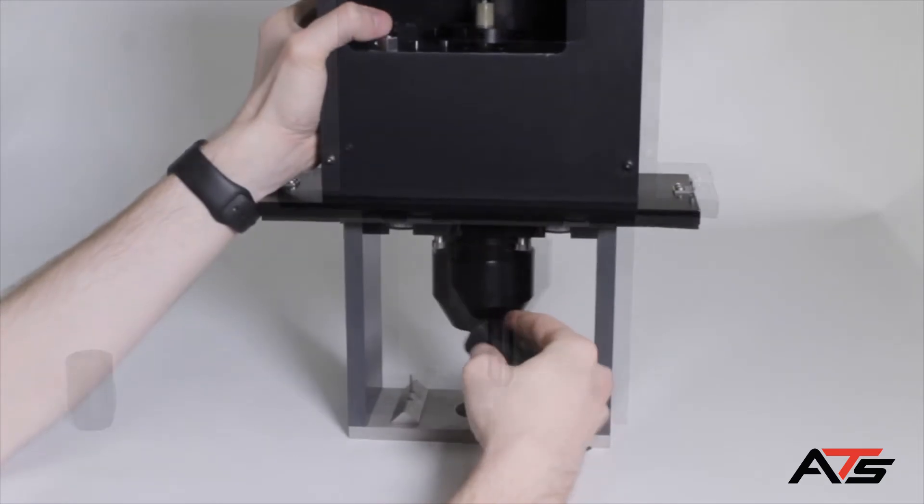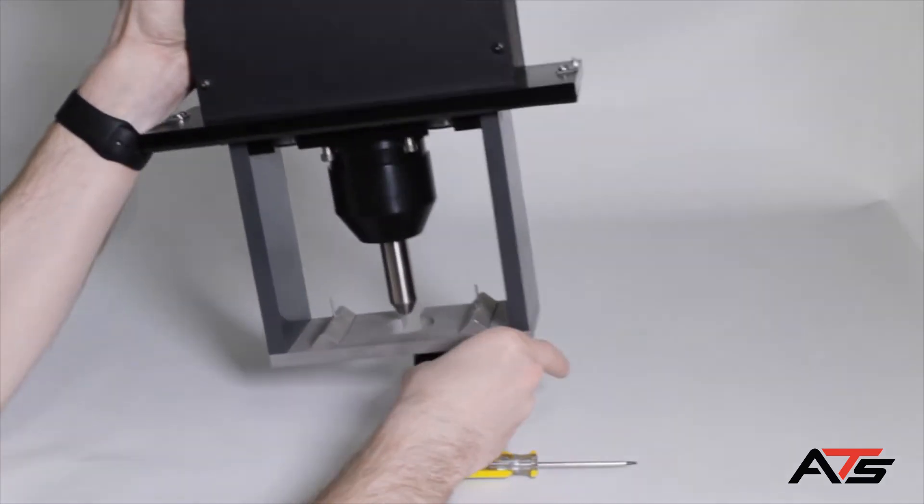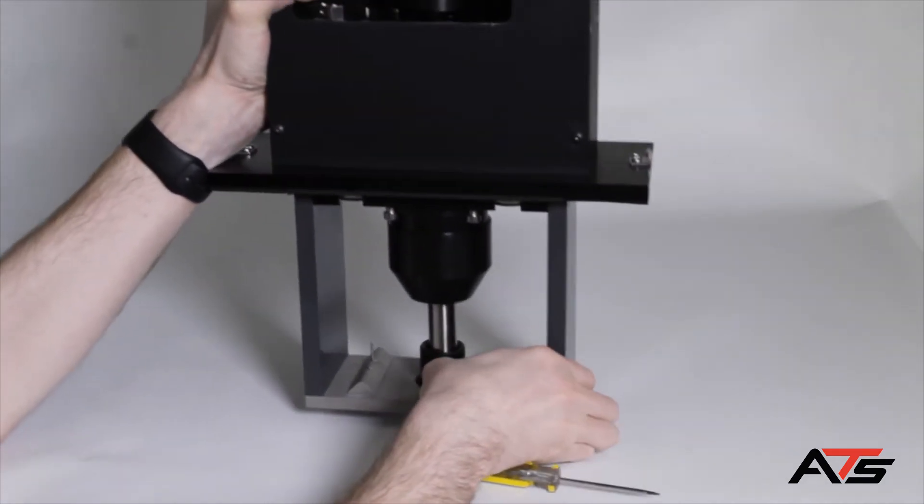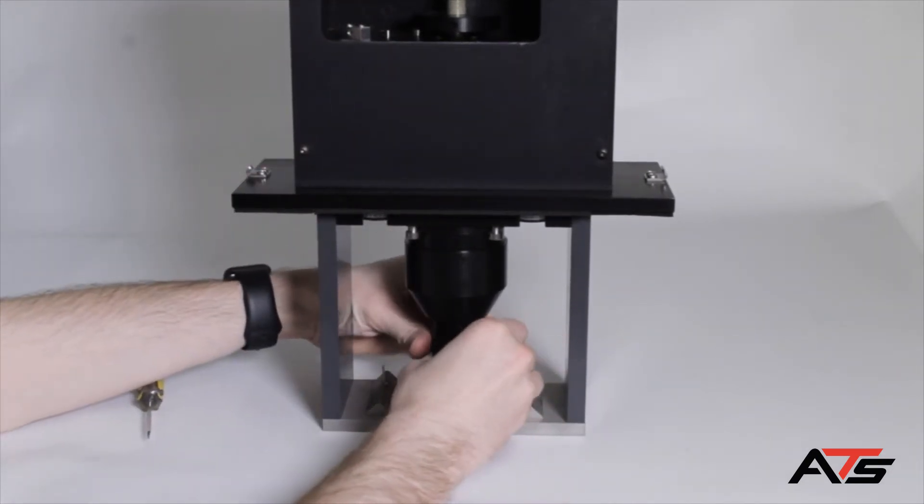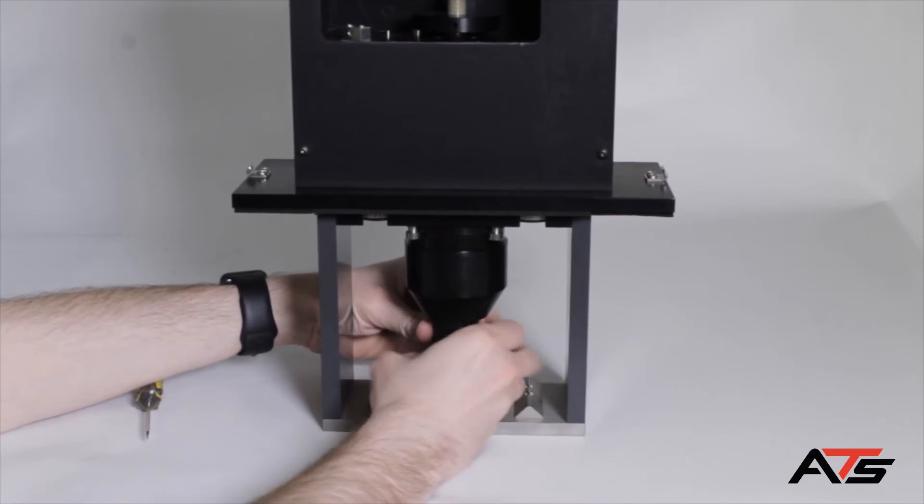To reattach the lower portion of the load shroud, carefully lift the load frame and position it so the load nose is directly above the lower portion of the shroud. Lift the lower portion of the shroud up and gently screw it into the upper portion.